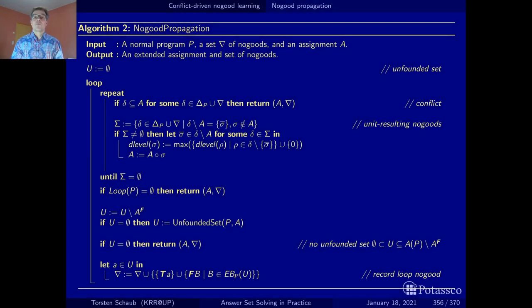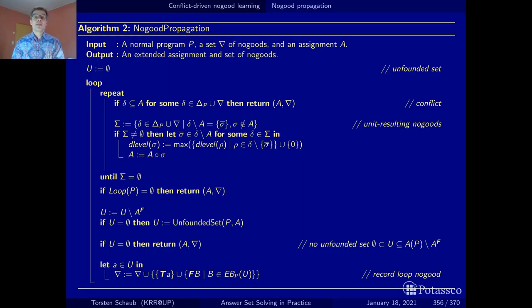Here is our algorithm for no-good propagation. It takes the logic program, the current set of dynamic no-goods, and the current assignment as inputs. The completion no-goods are determined from the program so we don't make them explicit. The algorithm returns an extended assignment and a set of no-goods, which may also be extended if loop no-goods were added. Otherwise the algorithm loops until it reaches a fixed point.